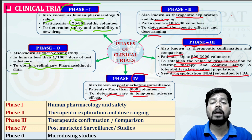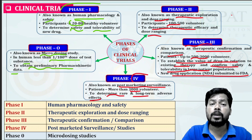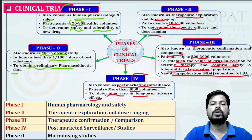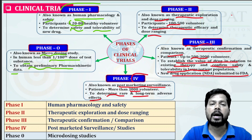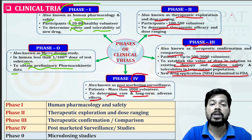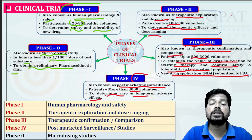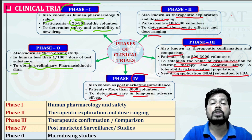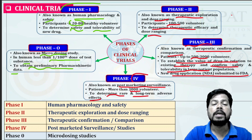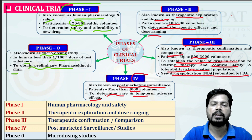A classic example in post-marketing surveillance is minoxidil. Minoxidil was originally designed as an anti-hypertensive, but after entering the market, post-marketing surveillance revealed that minoxidil is also used for the treatment of baldness in males. Minoxidil increases hair growth — a condition called hirsutism — and minoxidil one percent is used as drops in the treatment of male baldness.